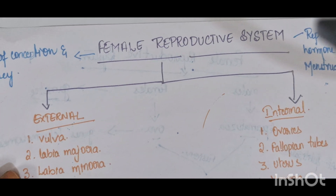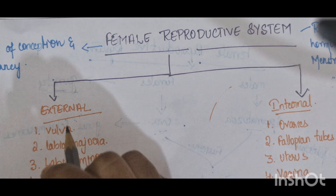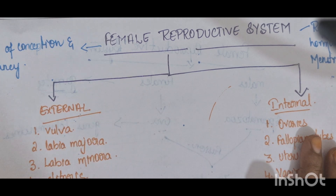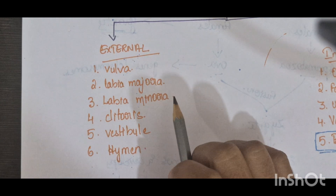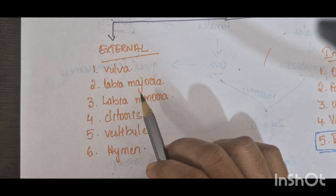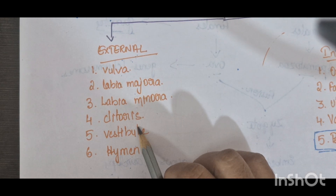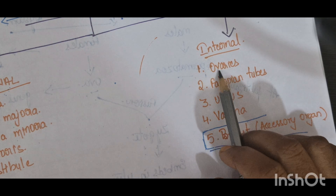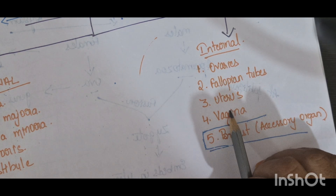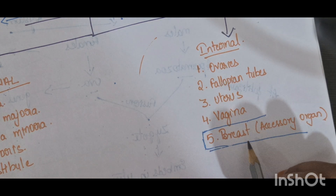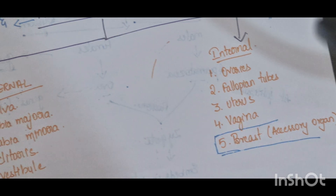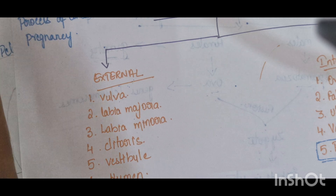Now we will see the female reproductive system. It consists of an external part and an internal part. The external parts consist of the vulva, labia majora, labia minora, clitoris, vestibule, and hymen. The internal parts consist of the ovaries, fallopian tubes, uterus, and vagina. The breast is a necessary accessory organ that also comes under the reproductive system.